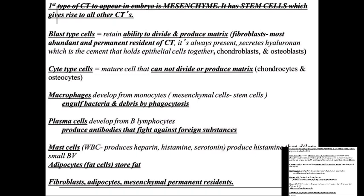Macrophages develop from monocytes. Monocytes are always in circulation in your bloodstream, and when they find some pathogen, lesion, or damage to tissue, they leave the blood supply and go into the tissues. Once in the tissues, they're called macrophages — large cell-eating structures that engulf bacteria and debris by a method called phagocytosis.